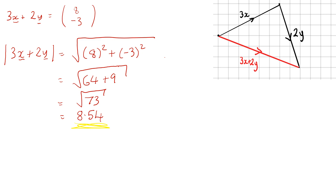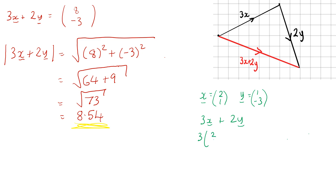We can check this another way. Remember the vector x was (2, 1) and the vector y was (1, -3). So 3x plus 2y in component form gives us (6, 3) plus (2, -6), which gives us (8, -3) — tying in exactly with our diagram. That's a way for us to check.